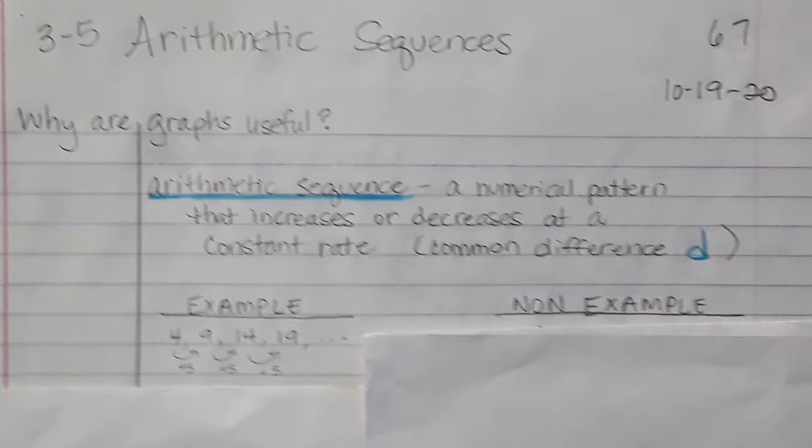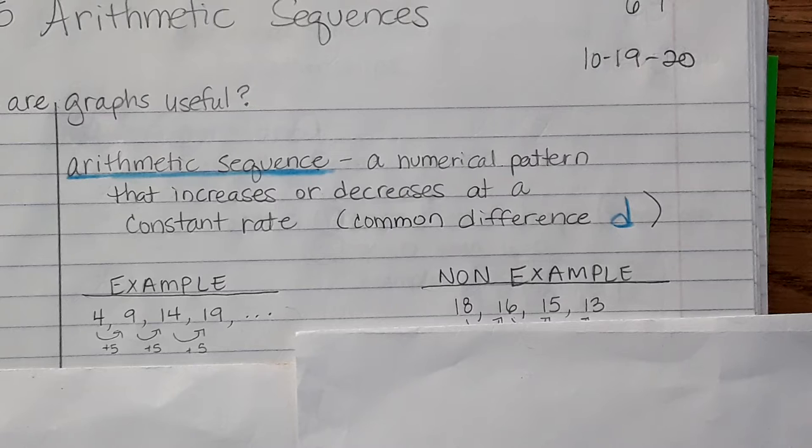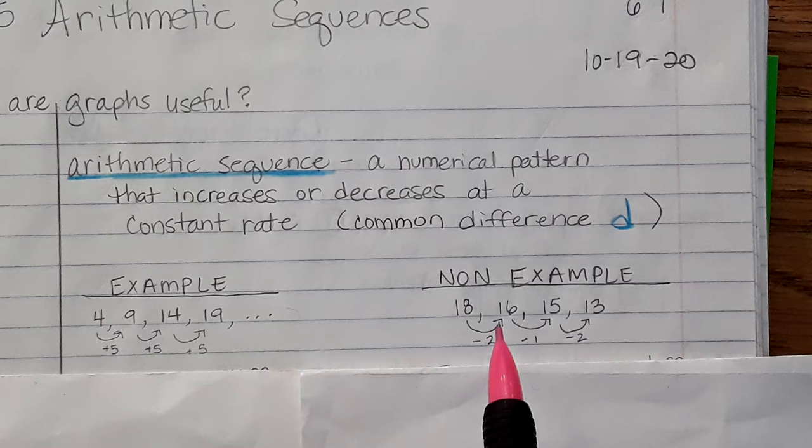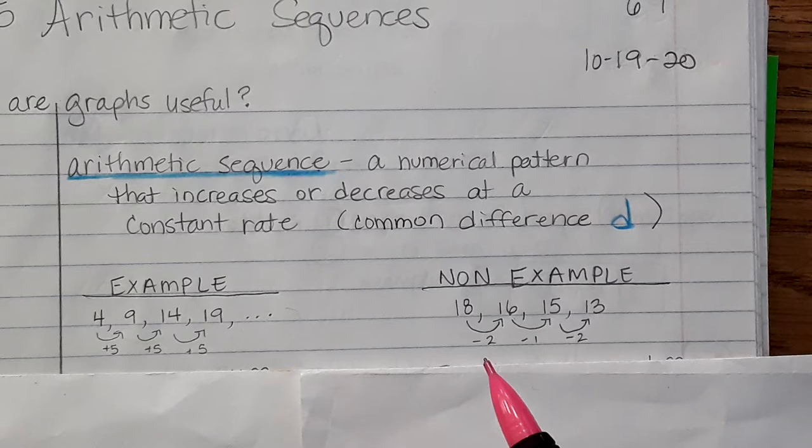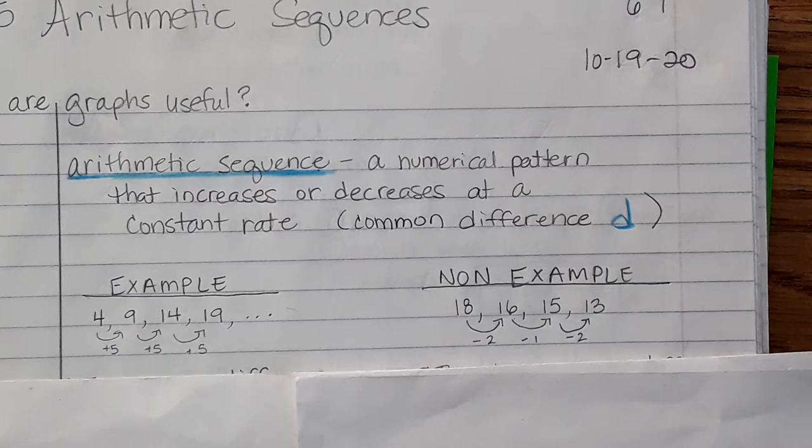A non-example is 18, 16, 15, 13. We have a difference of negative 2, a difference of negative 1, a difference of negative 2. Therefore, it is not a constant rate, and it does not have a common difference. Your common difference d can be a positive or a negative number, but this one here is not at the same or constant rate.